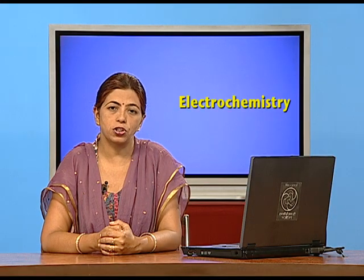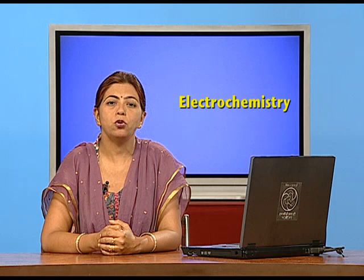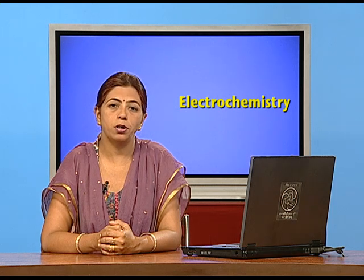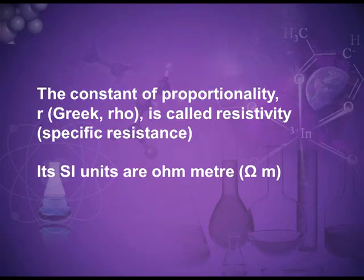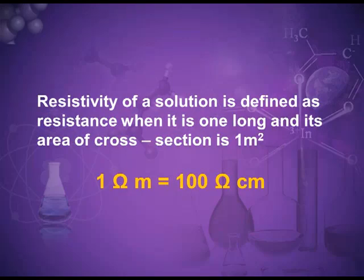R equals rho L upon A. This rho is the proportionality constant known as resistivity or specific resistance. By convention, we give preference to the term resistivity over specific resistance. The unit of resistivity is ohm meter. Resistivity is defined as the resistance when the conductor is 1 meter long and its area of cross section is 1 meter square. The symbol for resistivity is rho.